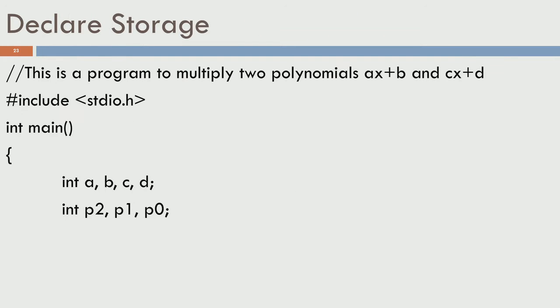Let us look at the program in its entirety. We have the first few lines with a comment at the top saying this is a program to multiply two polynomials ax + b and cx + d. It is always good to show the intention of the programmer — this kind of documentation is helpful for someone else reading your program. Then, as before, we have 'hash include stdio.h', which is necessary for all I/O operations — if you want to read from the keyboard or print on the screen, you will need this.